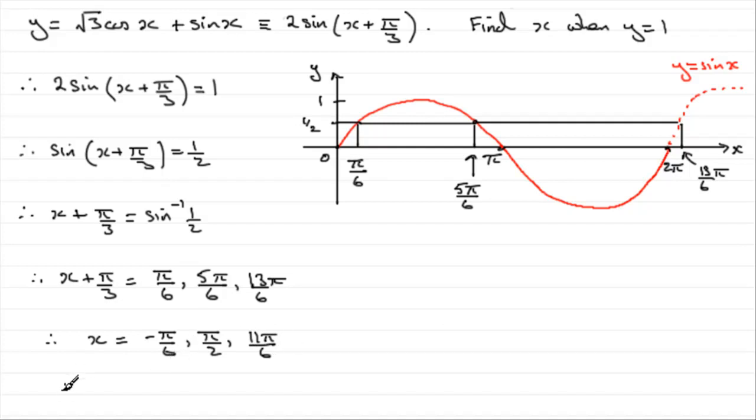Now, when it comes to giving our solutions in the range 0 to 2 pi, you can see that this value is out of range being negative. So we only have two values left, pi upon 2 and the 11 pi over 6. So they are our two solutions.